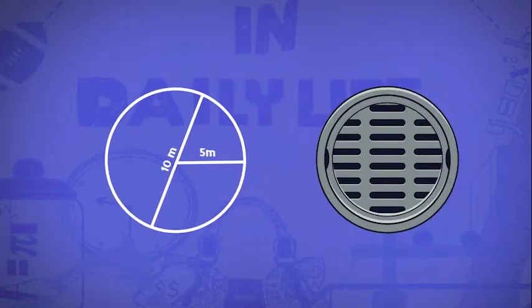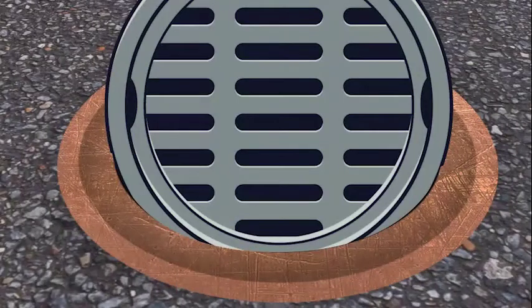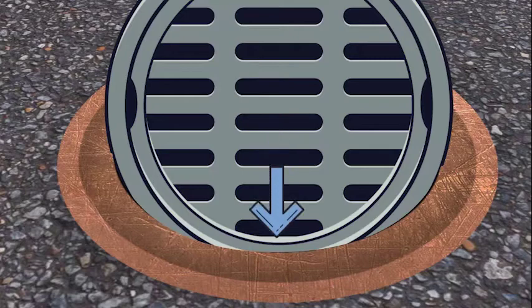Since the manhole cover or lid is also circular in shape with the same radius, that is 5 meters, let's put this lid on the manhole. The lid won't fall inside the hole. Why?